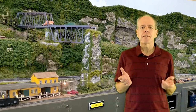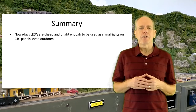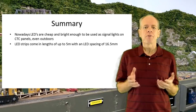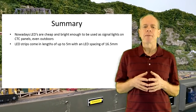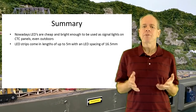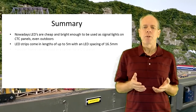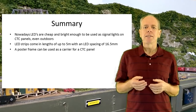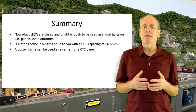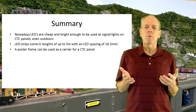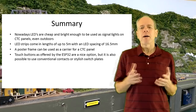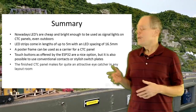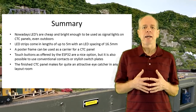So here is as always a quick summary of this video. Nowadays, LEDs are cheap and bright enough to be used as signal lights on CTC panels, even outdoors. LED strips come in lengths of up to 5 meters with an LED spacing of 16.5 mm — that is 300 LEDs on a strip, all of them individually controllable using just one wire and a serial protocol. A poster frame can be used as a carrier for a CTC panel; they are cheap and come in various sizes, so this methodology can be used for many different CTC panels that can be distributed on the layout and serve as local command input points. Touch buttons, as offered by the ESP32, are a nice option, but it is also possible to use conventional contacts or stylish switchblades. The finished CTC panel makes for quite an attractive eye-catcher in any layout room.